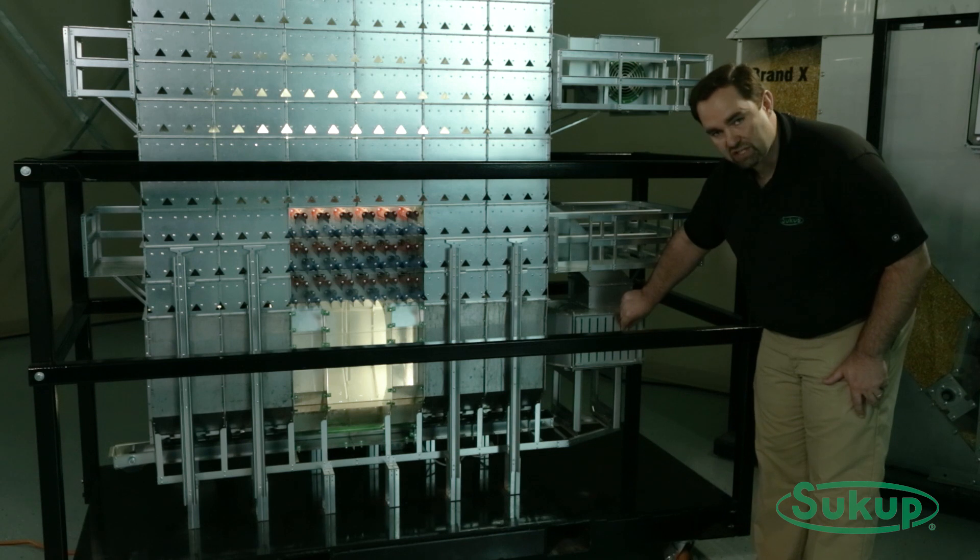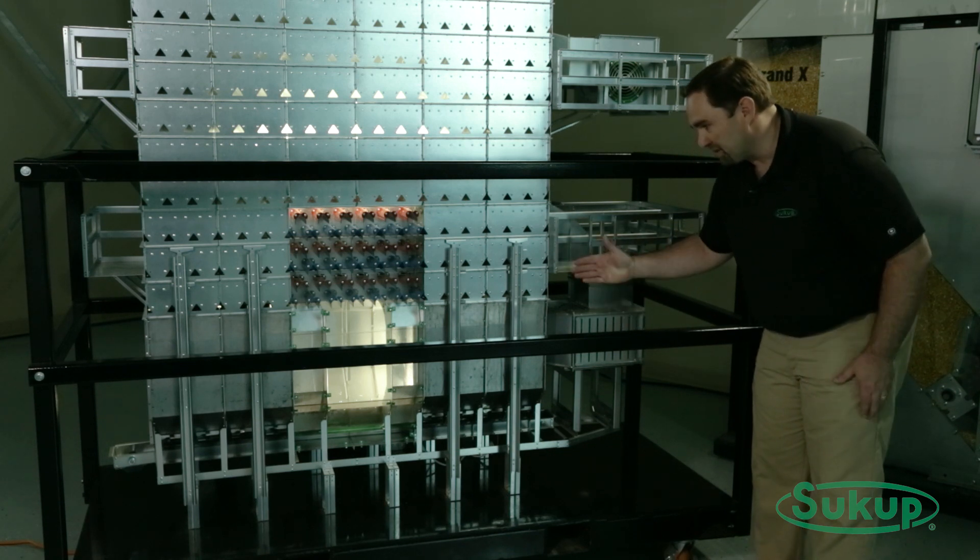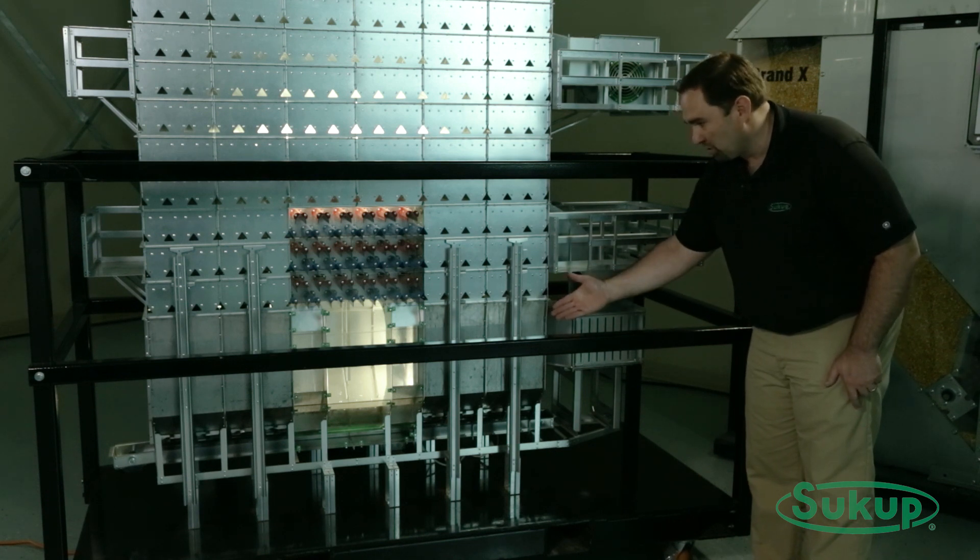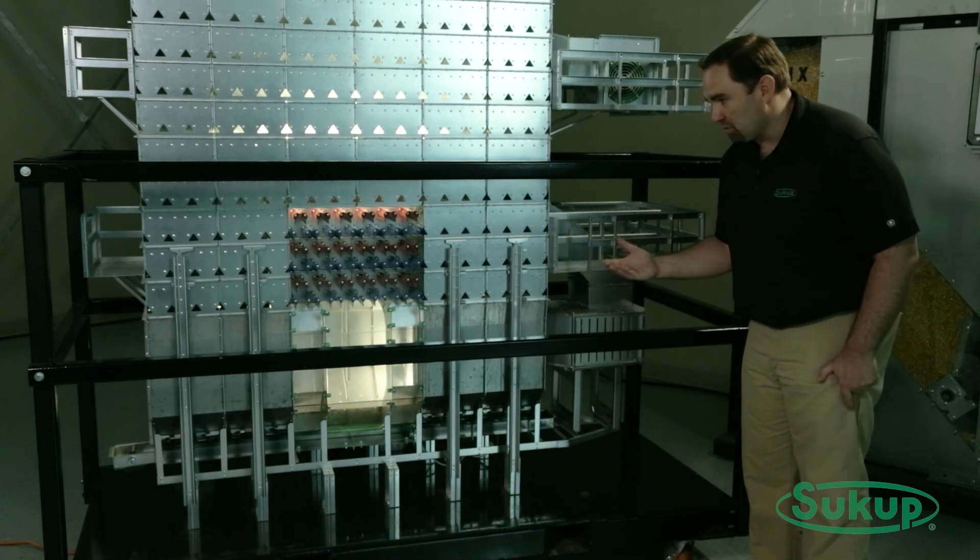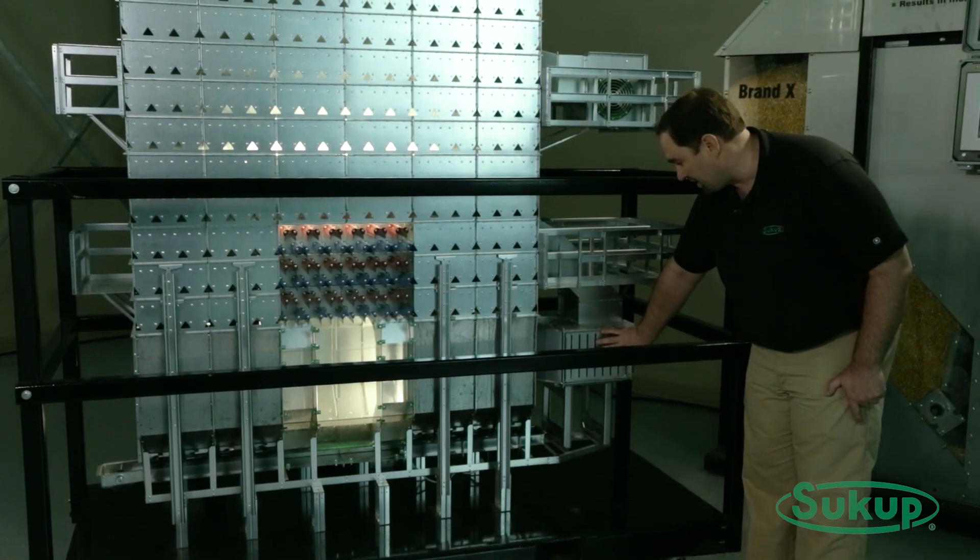Notice we have louvers that are adjustable on there. These louvers can be set and adjusted to vary the temperature of the grain coming out. So the more closed we have these louvers, the more cooling we're going to do, the more heat we recover. If we open them a little more, our grain temperature will go up because we're pulling less air through the screens and getting more free outside air.